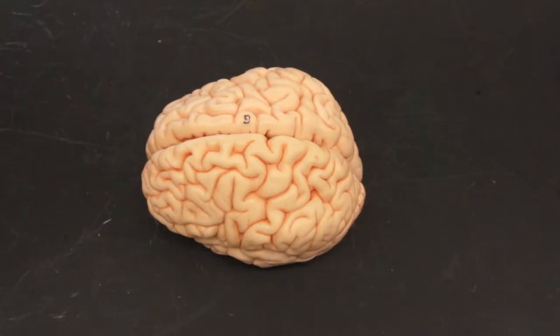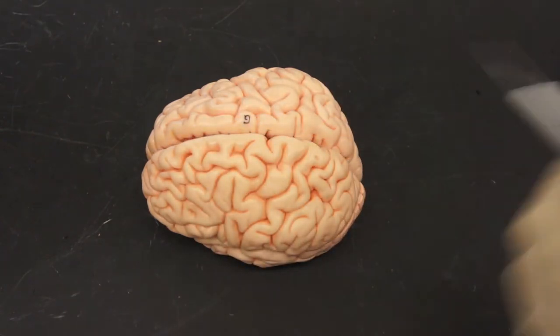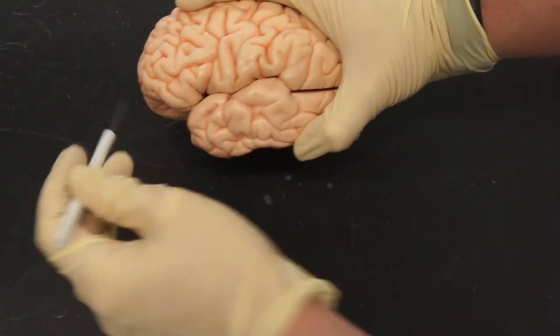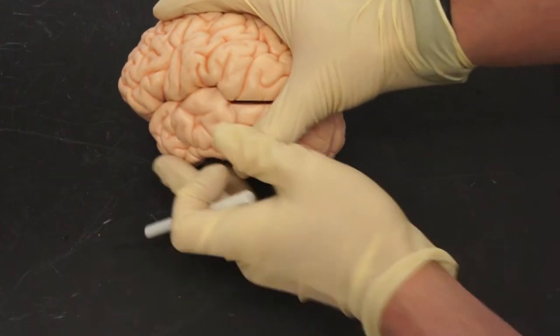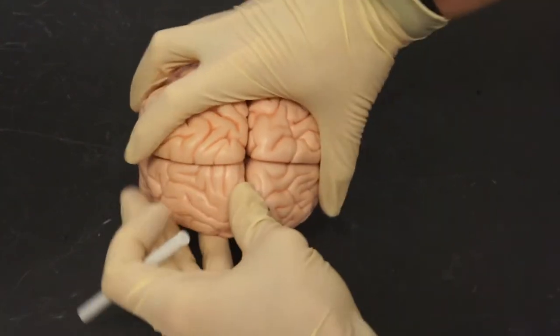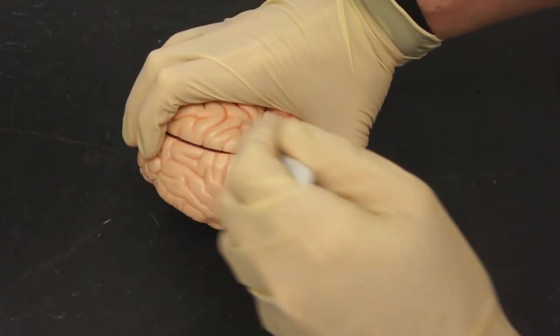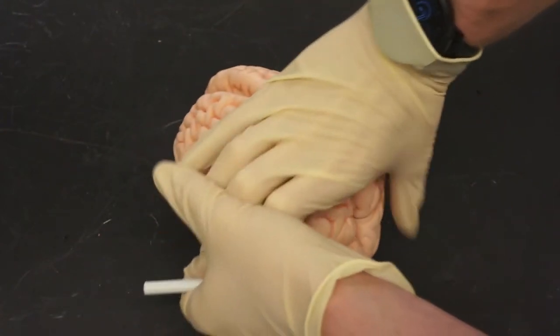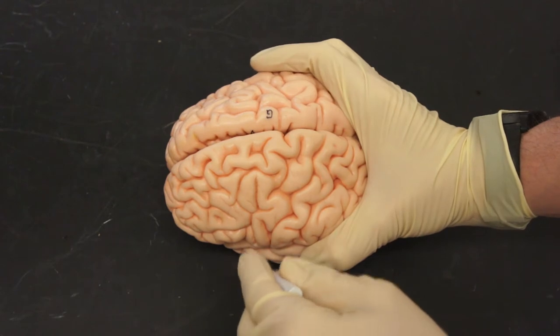Here we have a top view of the cerebrum. Down the middle we have the longitudinal fissure. Separating temporal and parietal lobes, we have the lateral sulcus. Here in the back, separating occipital lobe and parietal lobes, we have the parietal occipital sulcus. Then coming across the top, we have the central sulcus.